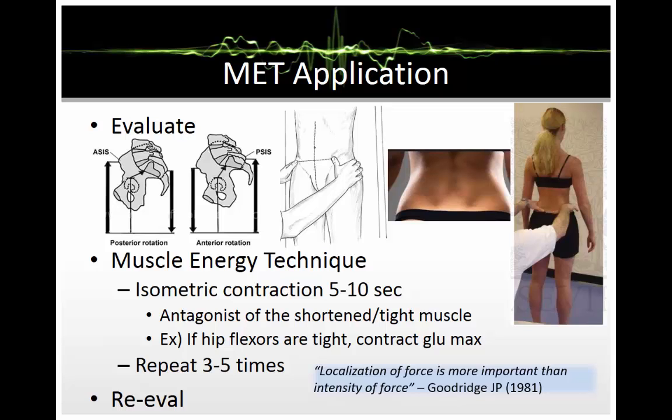To perform the muscle energy technique, first we need to evaluate our patient. It is really common to have a lower extremity cross in a patient population. We will need to locate the anterior superior iliac spine, also known as the ASIS, and the posterior superior iliac spine, also known as the PSIS. We can locate the ASIS by placing our hands on the iliac crest of the patient as they're standing in front of us. Typically where our thumbs hit is the most proximate portion of the hip. We locate the PSIS by having the patient turn around — you can locate the lower back dimples, which is approximately where the PSIS is located.